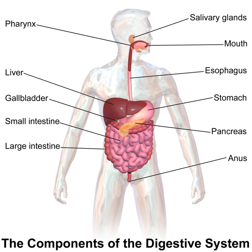Diseases that affect the large intestine may affect it in whole or in part. Appendicitis is one such disease, caused by inflammation of the appendix. Generalized inflammation of the large intestine is referred to as colitis, which when caused by the bacteria Clostridium difficile is referred to as pseudomembranous colitis. Diverticulitis is a common cause of abdominal pain resulting from outpouchings that particularly affects the colon. Functional colonic diseases refer to disorders without a known cause, and include irritable bowel syndrome and intestinal pseudo-obstruction. Constipation may result from lifestyle factors, impaction of a rigid stool in the rectum, or in neonates, Hirschsprung's disease.